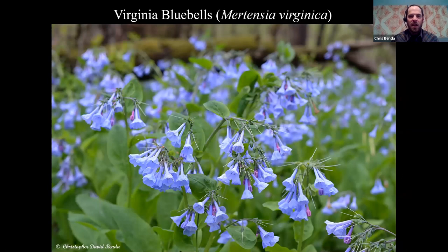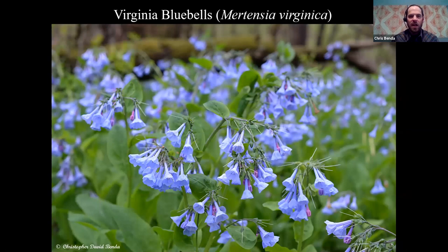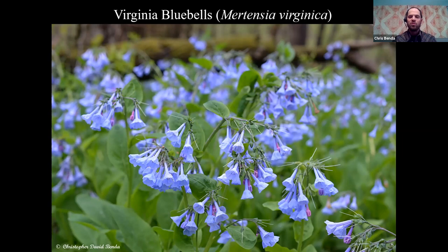Bluebells — I took this picture at Thatcher Woods in Cook County, but this grows very commonly throughout the state in various floodplain habitats. It's in the Boraginaceae. Most plants in that family have petals fully opened up, but in bluebells the petals have fused into a tube — that's why it's called 'bluebells.' Definitely a gorgeous wildflower and a quick bloomer, but a stunner. You can always find big patches of bluebells around the state.